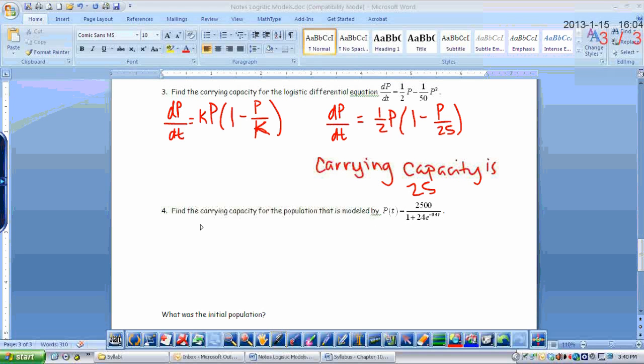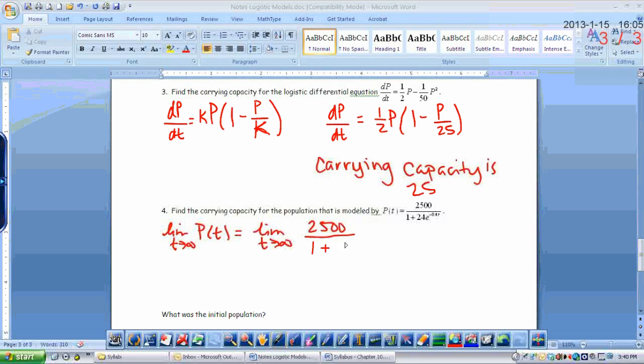And remember that when you're given the actual population equation, if you'll look back on the last page of the notes, that the limit as t approaches infinity of p of t represents the carrying capacity. So I just need to find the limit as t approaches infinity of p of t. And like we did on the last page of the notes, I think it's helpful to rewrite these negative exponents as fractions. So I'm going to rewrite this as 2,500 over 1 plus 24 over e to the positive 0.4t.